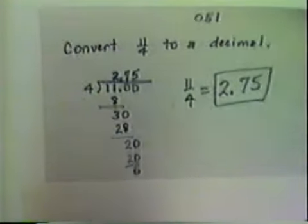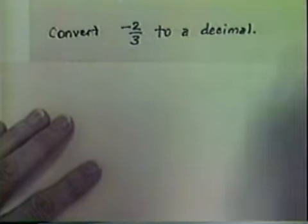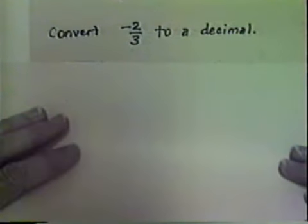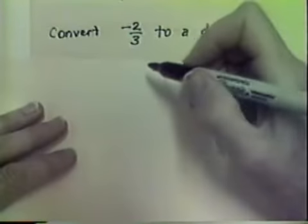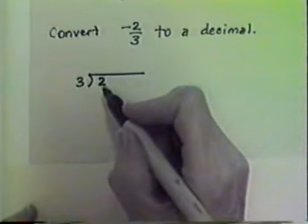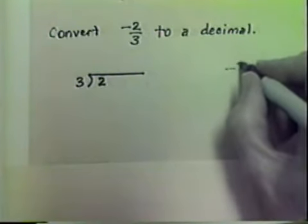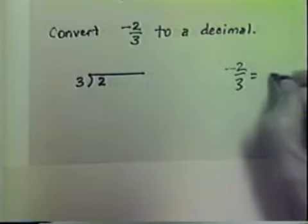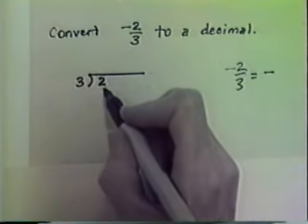One more example of converting a fraction to a decimal. Let's convert negative two-thirds to a decimal. To convert negative two-thirds to a decimal, we know that the number is negative. But in our division, it's easier to keep the negative out of the picture. We'll simply say that negative two-thirds will equal a negative number when we get through, but for the moment we will not put the negative into the problem because it's confusing.